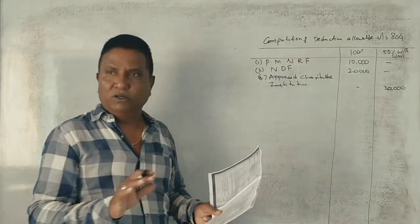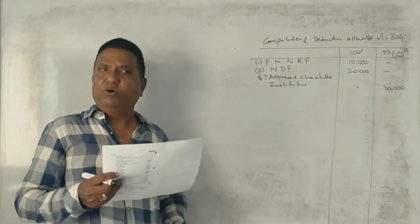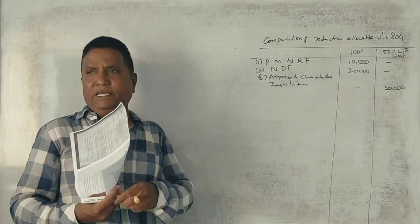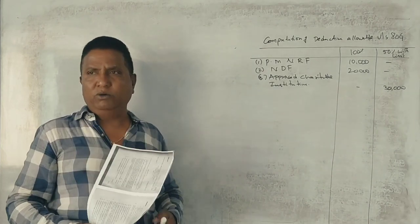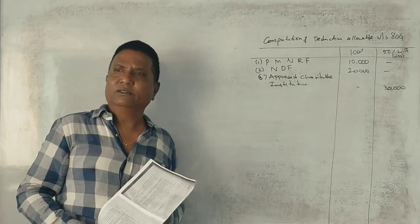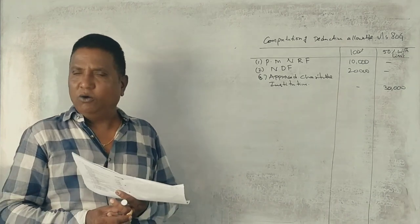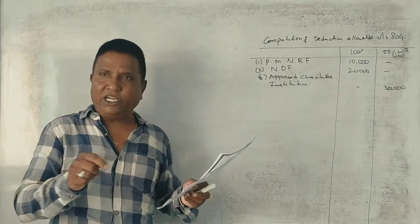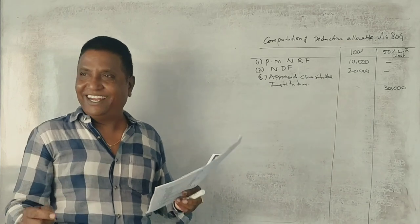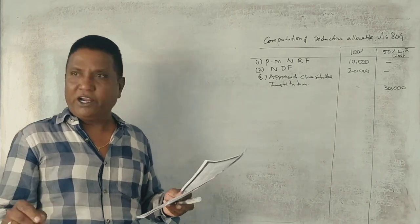Next, aid to poor student, that is 2,000 rupees. Is there proof? No. If aid to poor student, it is not approved, so it is not allowed.